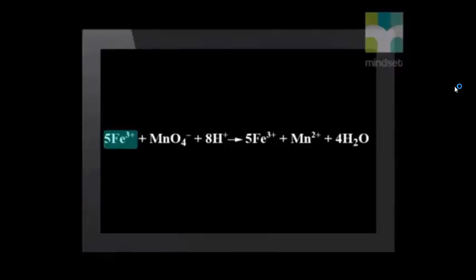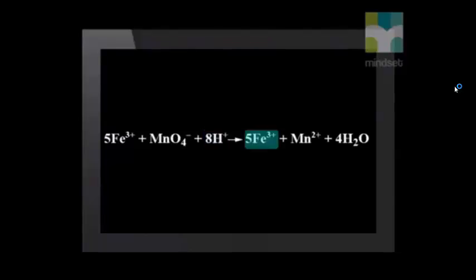So we need to multiply the hydrogen on the left by 8 to balance this. Now as reactants, we have 5 Fe²⁺, one manganate 1-, and 8 H⁺ ions. The products are 5 Fe³⁺, one Mn²⁺, and 4 water molecules. Do a final check that both the atoms and the charge are balanced.